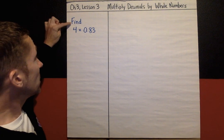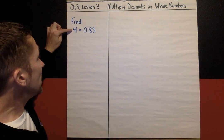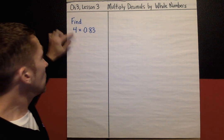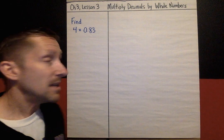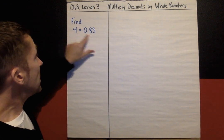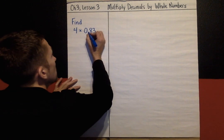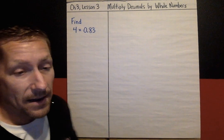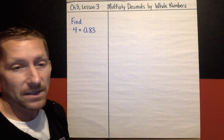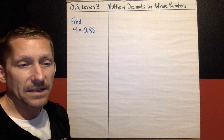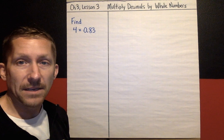So that is what you should be able to do at the end of this lesson, multiply decimals by whole numbers. Let's get right into it. The first example we're going to look at is find the product of 4 times 0.83, a whole number and a decimal.